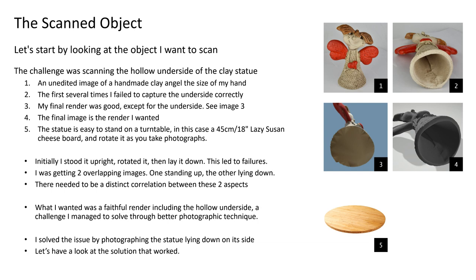Image 1 on the right shows a clay statue the size of my hand, which we will scan. Rendering the hollow underside correctly is what proved challenging — while the render was detailed and accurate, the underside was not reproduced correctly. The fourth image shows what I was aiming at. Initially I stood the statue upright on the lazy Susan, rotated it 360 degrees while taking images, then lay it down to capture the underside. This approach failed — I ended up getting two overlapping models, one standing up and the other lying down, with insufficient correlation between the photos. I managed to solve the challenge through a better photographic approach.